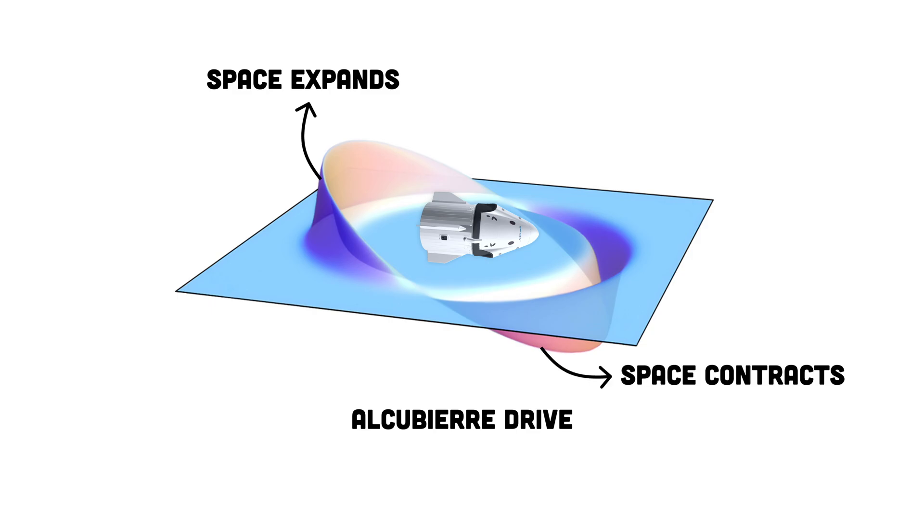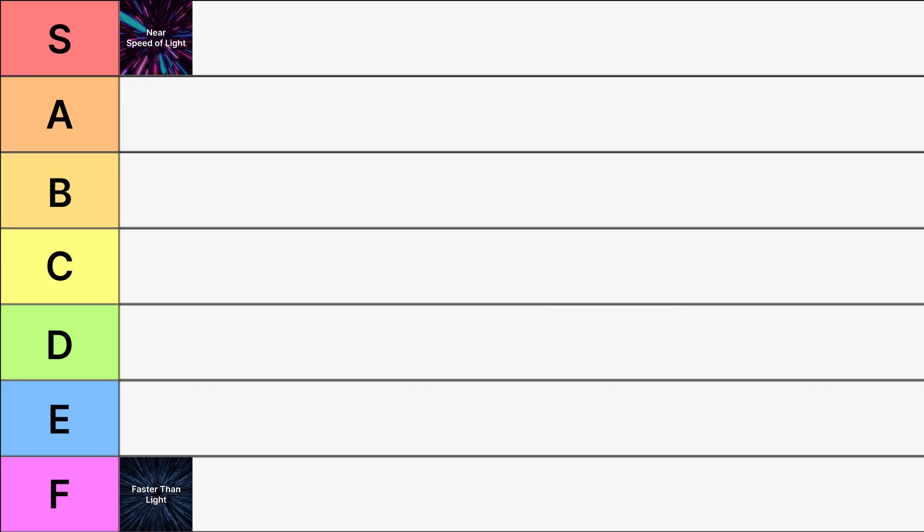In front of the spaceship, space contracts. This contraction pulls the ship toward its destination by shrinking the space ahead of it. The ship resides in a region called a warp bubble, a stable, localized area of space time. Because of this intriguing possibility, I'm going to bump this up from an F-tier to a D-tier.